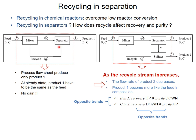Instead, we add a splitter. The splitter divides the C-dominant separator output into two streams: a portion goes back to the mixer as recycle, and the rest exits as product 2. This gives us two outputs — a B-dominant product 1 and a C-dominant product 2 — so separation is working.